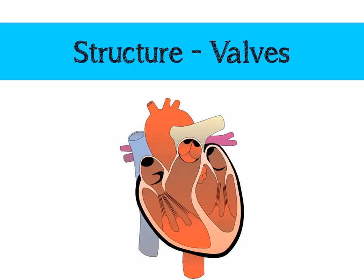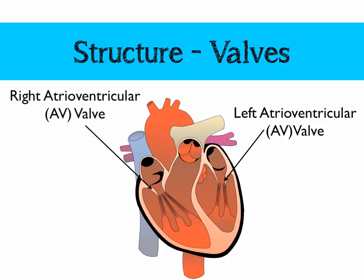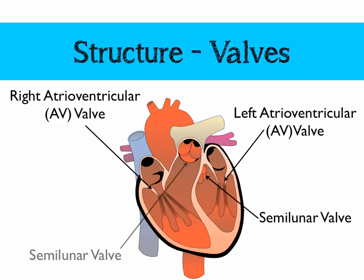We also need to know about some valves. For the AQA specification, we can call the atrioventricular valves — here on the left and here on the right — just AV valves. If you're feeling extra technical, the right AV valve is also known as the tricuspid valve, and the left atrioventricular valve is also known as the bicuspid valve. But for simplicity, I suggest learning them as AV valves. We've also got semilunar valves, and they're the gateway between the ventricles and the arteries.